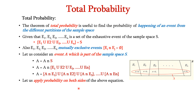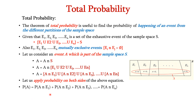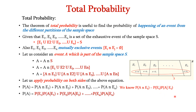Let us apply probability on both sides of the equation. We get P(A) equals P(A intersection e1) plus P(A intersection e2) up to P(A intersection en). According to the product rule, we can express P(A intersection e1) as P(E1) times P(A given e1).